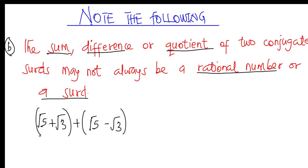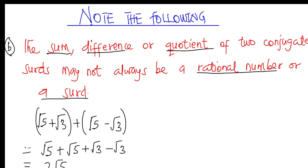Let's take the sum of the conjugate pair √5 + √3 and its conjugate √5 − √3. Adding them: √5 + √5 = 2√5, and √3 − √3 = 0. So the sum is 2√5, which is a surd. This shows that under the sum operation, we can get a surd result.